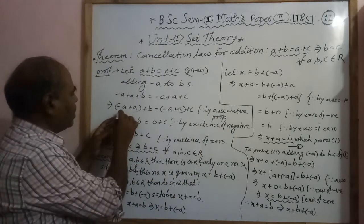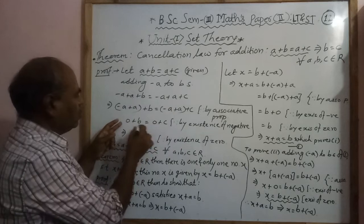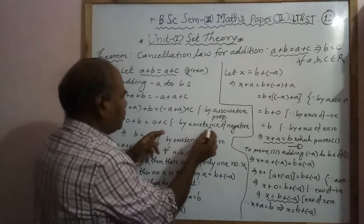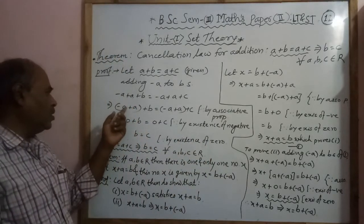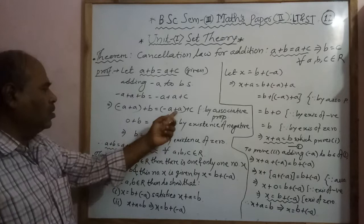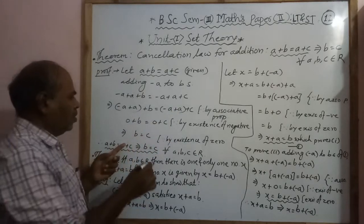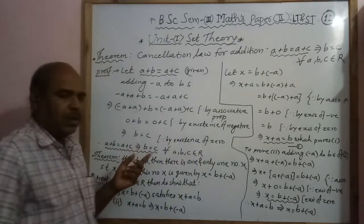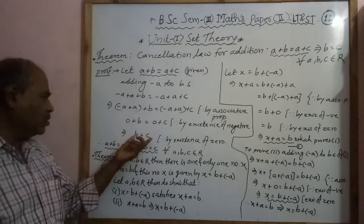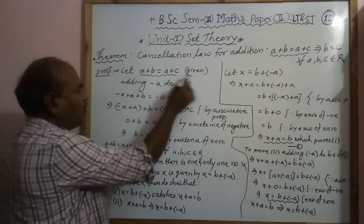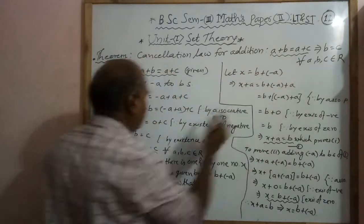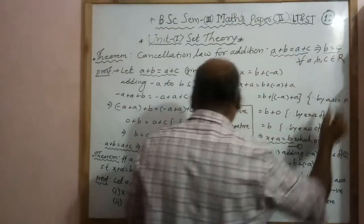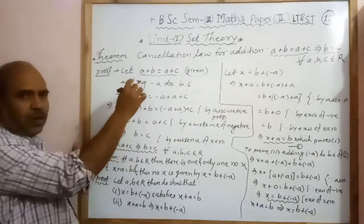Now we know that minus A plus A is 0, therefore 0 plus B and 0 plus C. This is changed by existence of negative, since minus A is the negative of A — addition gives 0. Therefore B equals C. We considered the left-hand side A plus B equal to A plus C and arrived at B equal to C. Hence the cancellation law is proven.